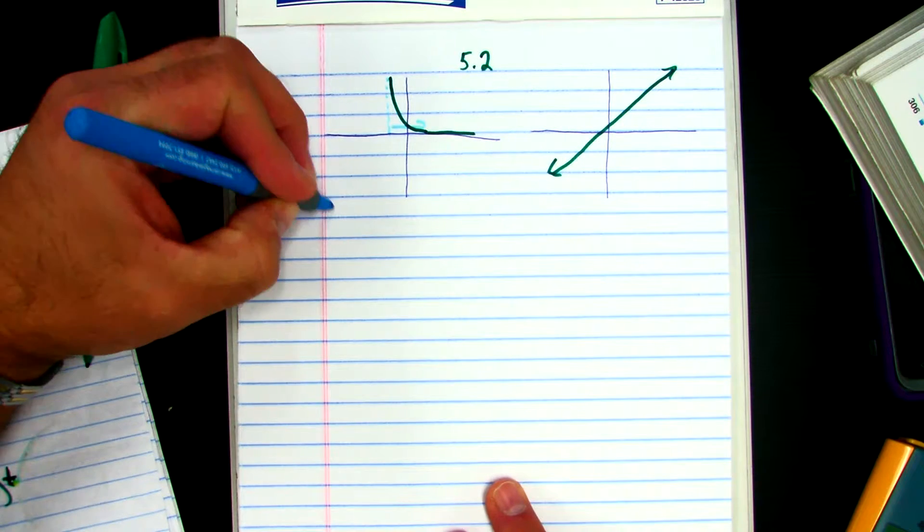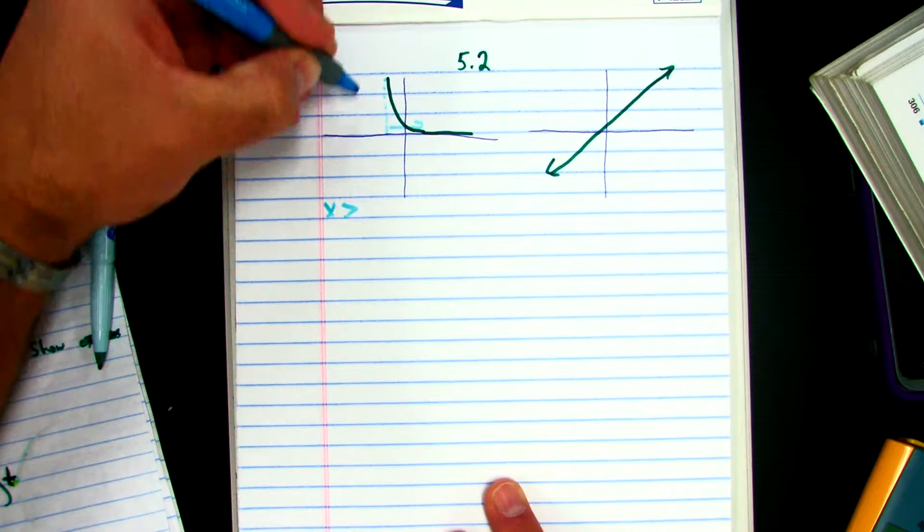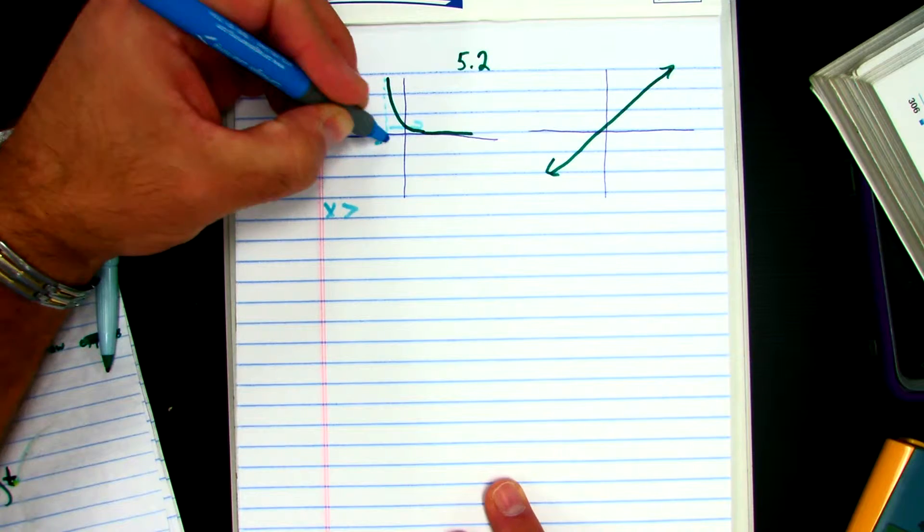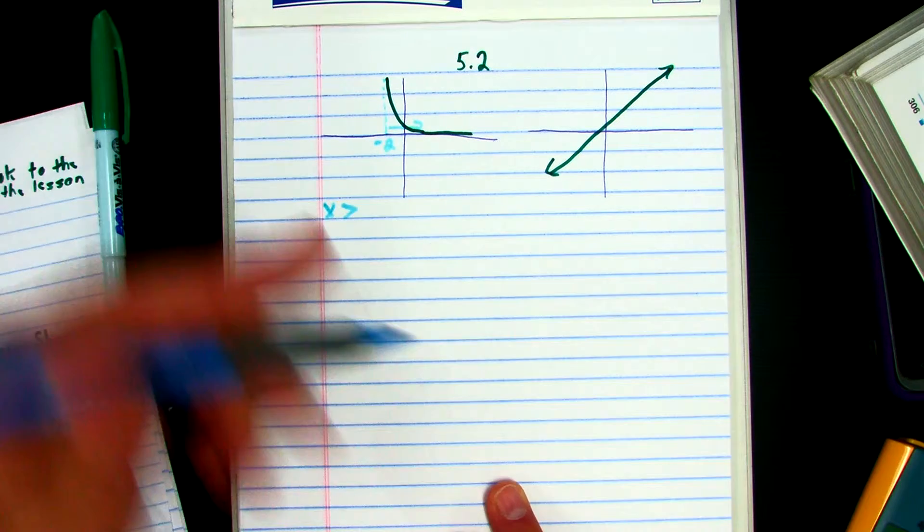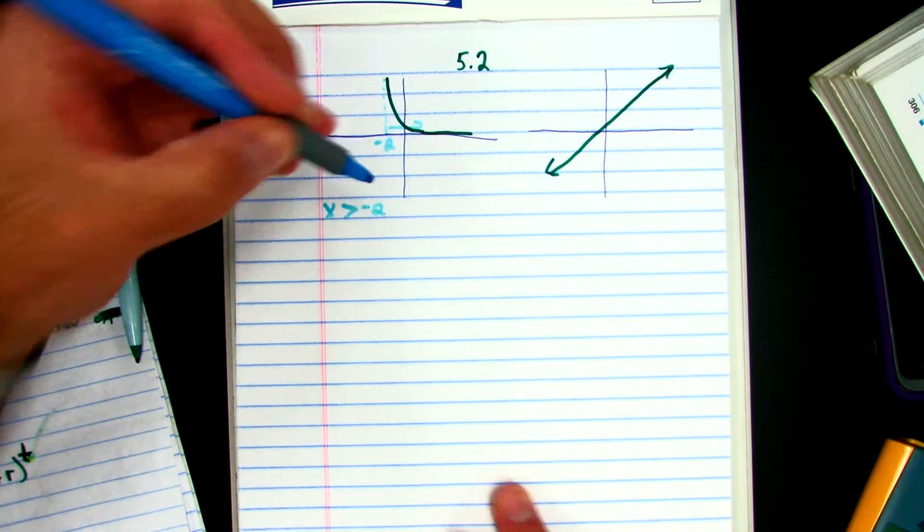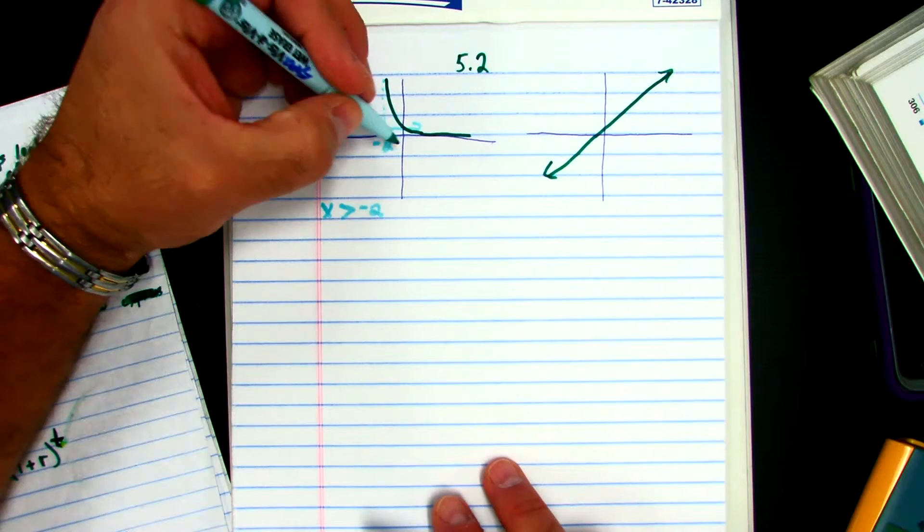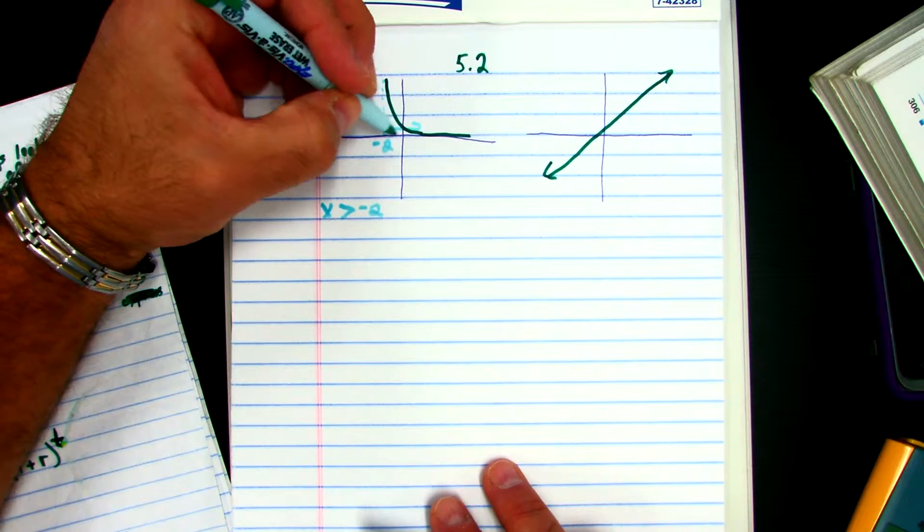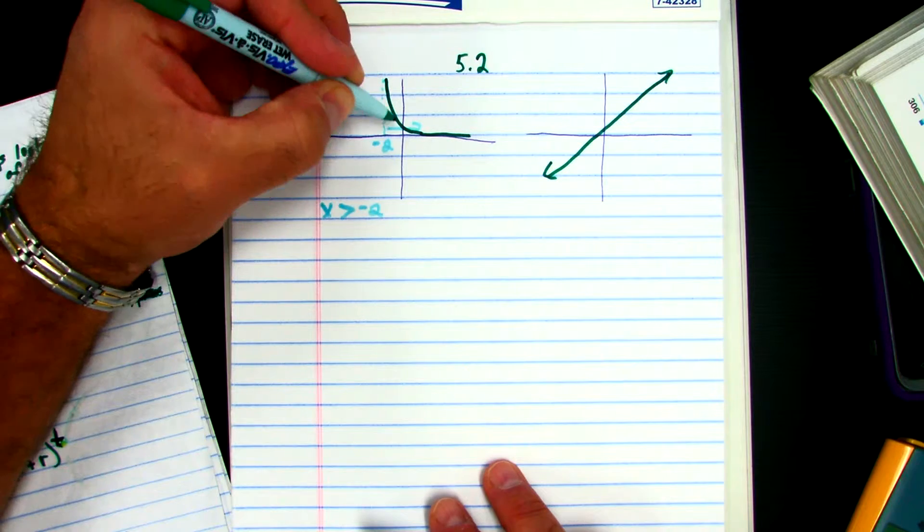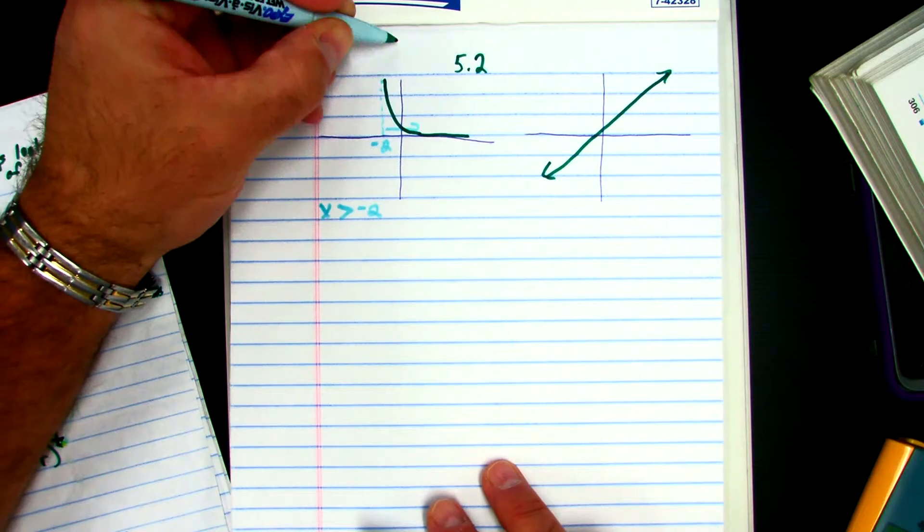So that means all of my X's would have to be greater than whatever this number is. I'm going to make it up and just say it's negative 2. So all of my X answers have to be greater than negative 2. Whereas all my Y's, I start on the Y axis, which would be at 0. And I notice that the line goes all the way up. It doesn't go below 0.